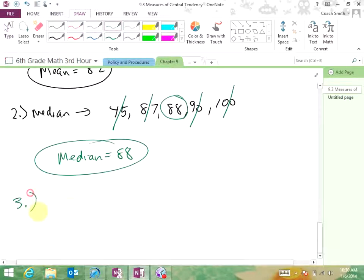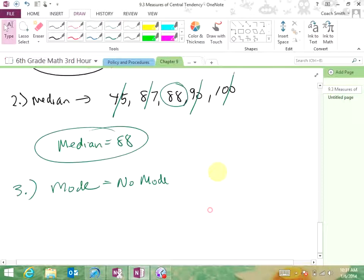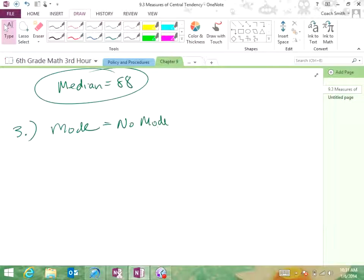Number three is the mode. Well, we already said the poor mode. There's not one. A lot of times in these lessons, it'll be that way because you're using such a small amount of numbers. What about the range? Oh, yes. The range. Thank you. Range is equal to 100 minus 45, which is 55.